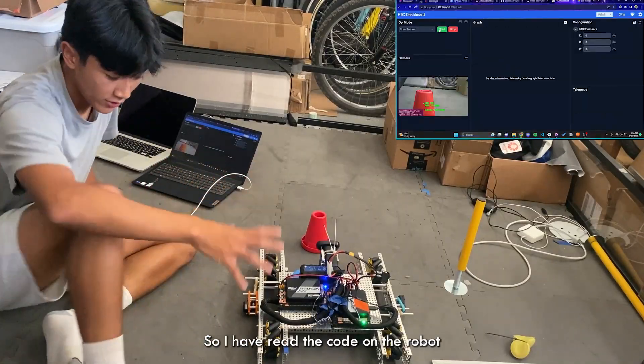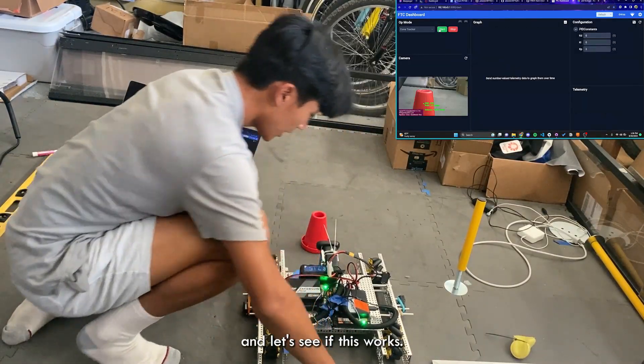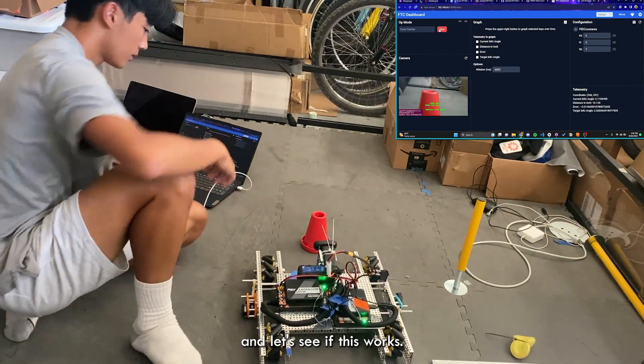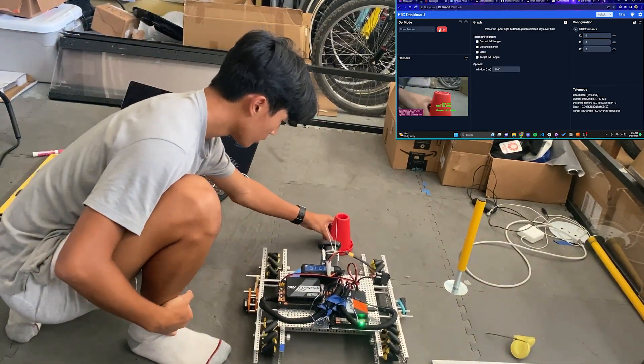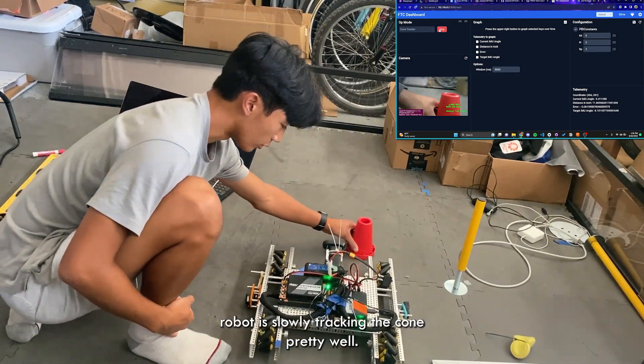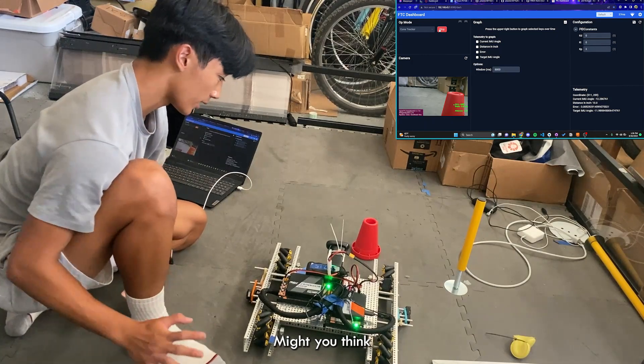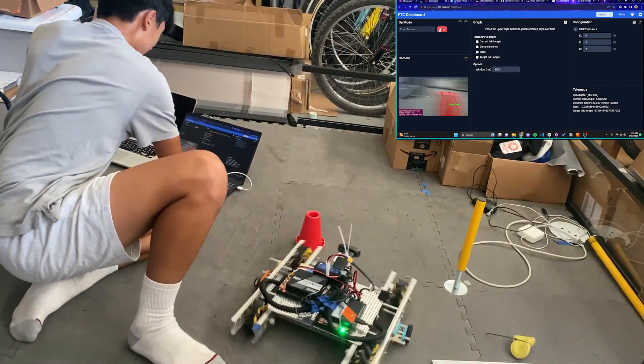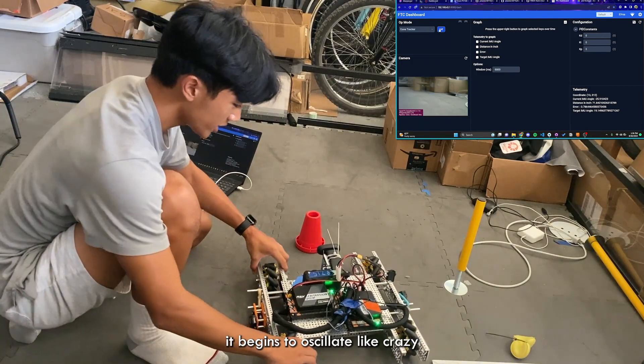So I ran the code on the robot and let's see if this works. Okay, so as you can see the robot is slowly tracking the cone pretty well, might you think. However, the moment I increase the speed it begins to oscillate like crazy.